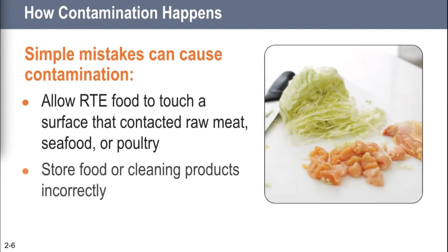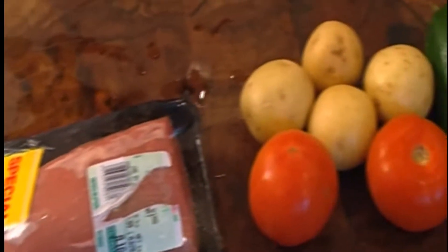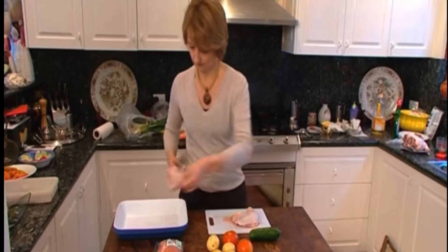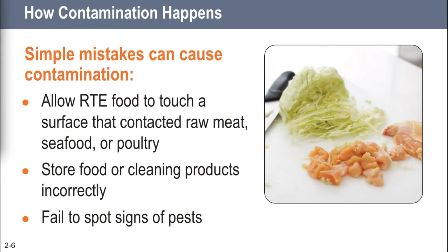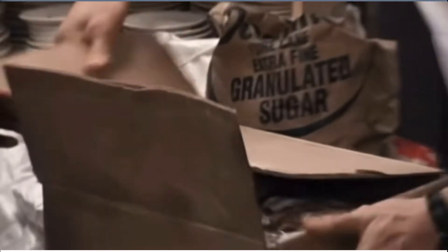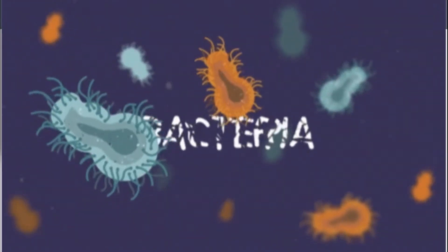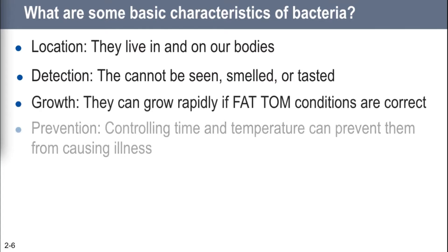If you allow ready-to-eat food — food that goes directly from the kitchen onto the plate and into someone's mouth — to touch a surface where raw meat, seafood, or poultry has been, that's cross-contamination. Not storing food or cleaning products correctly is another easy way. And a lot of students don't realize the danger of not being on the lookout for signs of pests: roaches, mice, and rodent droppings.